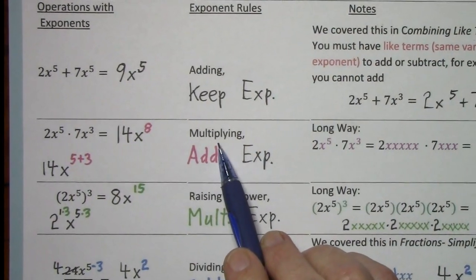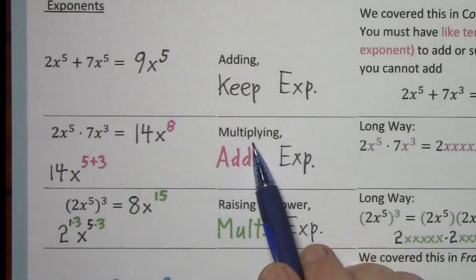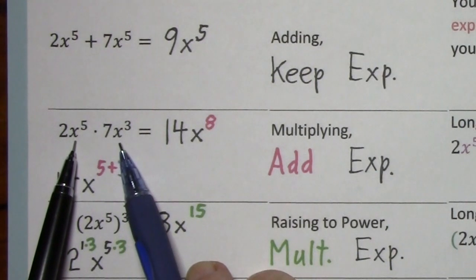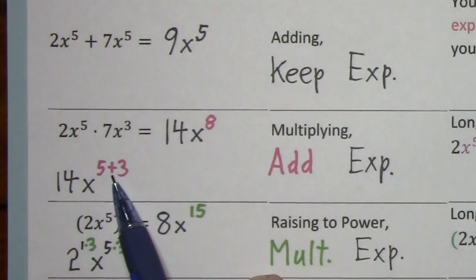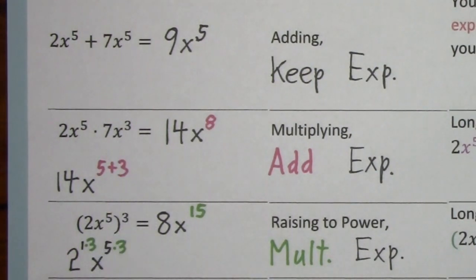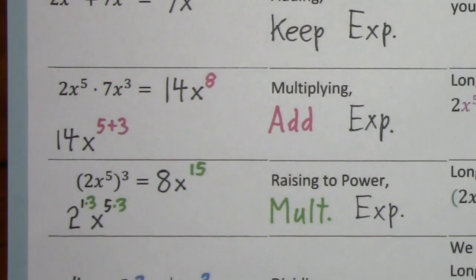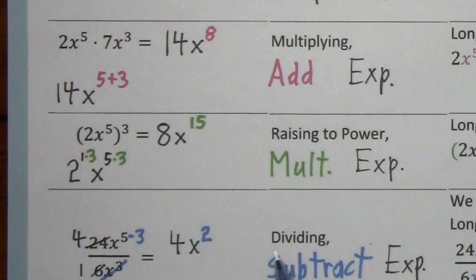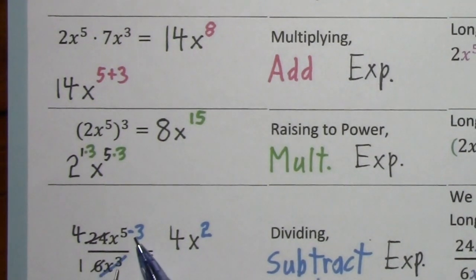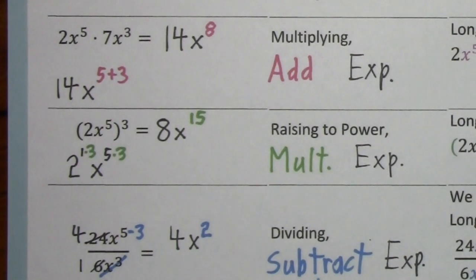In particular, we'll be working with multiplying like bases — you add the exponents — and when dividing like bases, you subtract the smaller from the larger exponent.